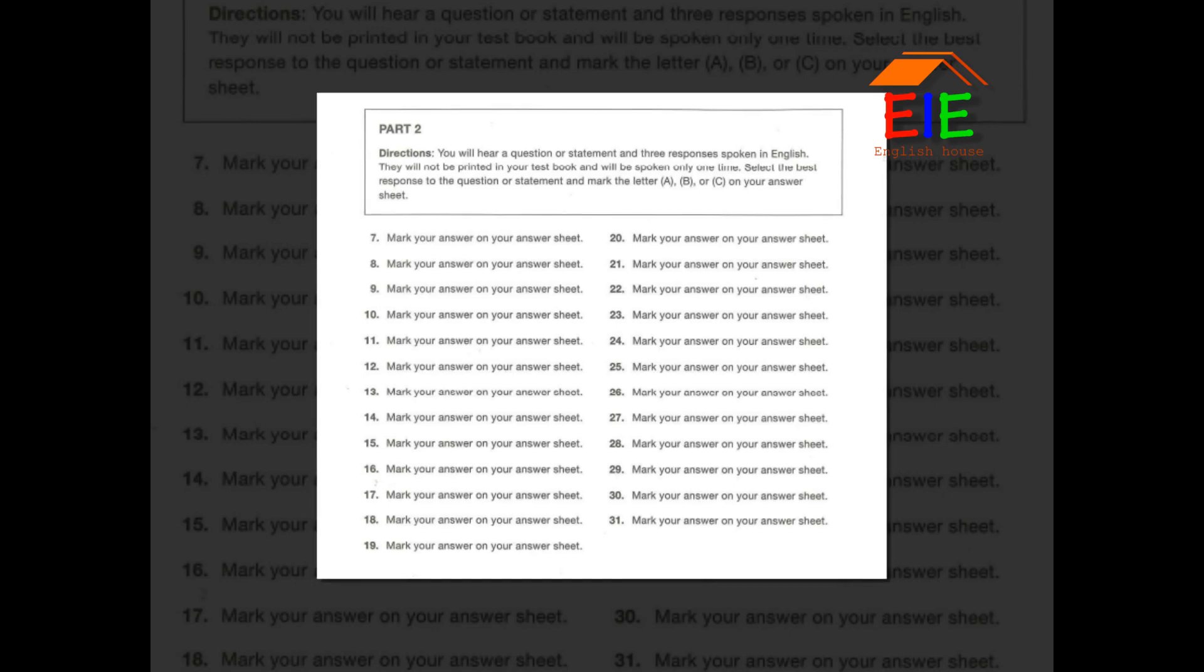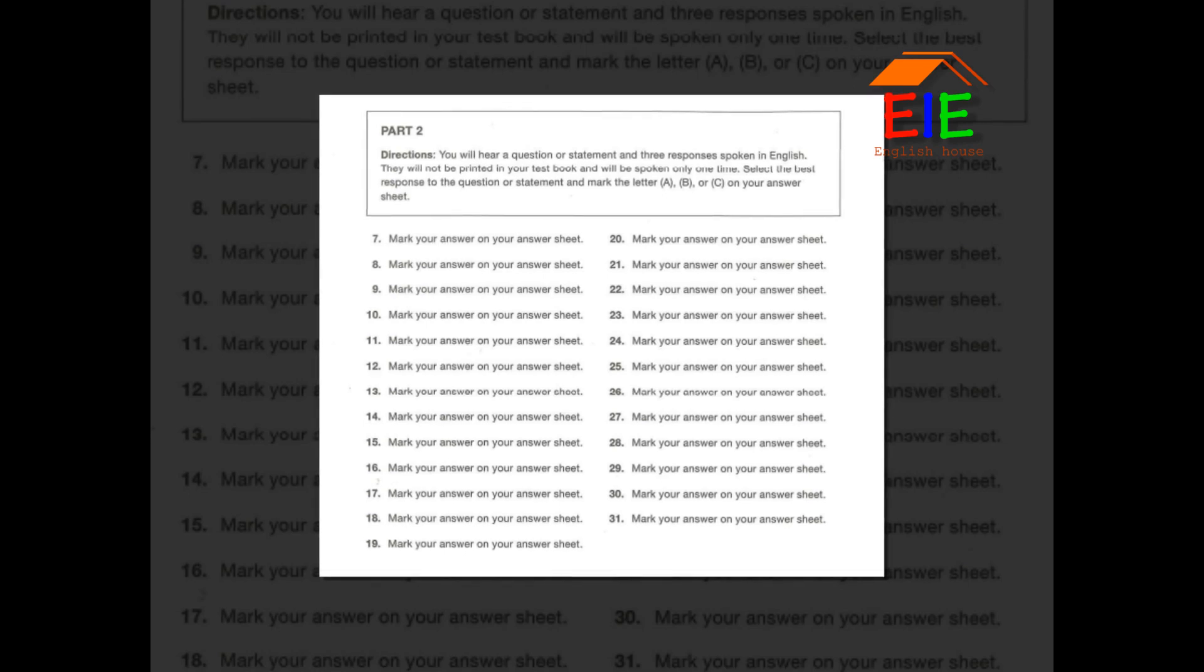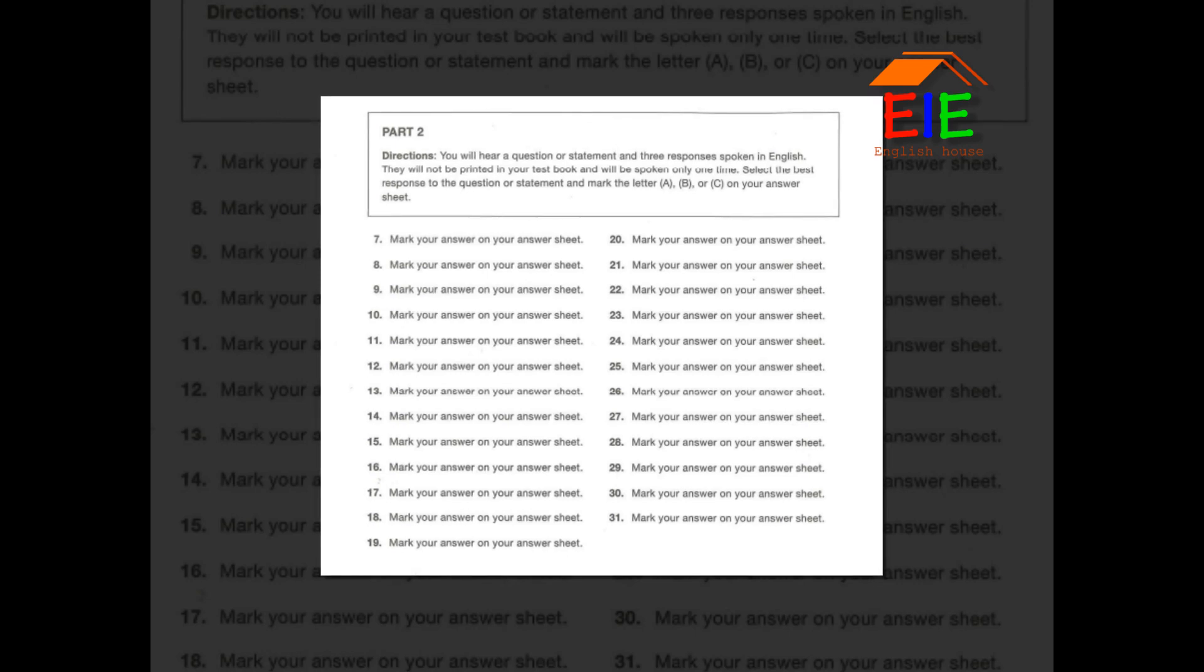Number 18: Where did Robert put the budget guidelines? A. About two days ago. B. A long line at the cafeteria. C. He left them on my desk.